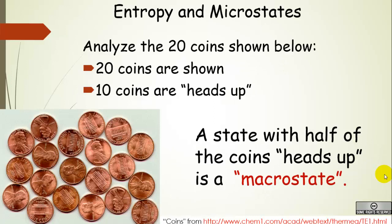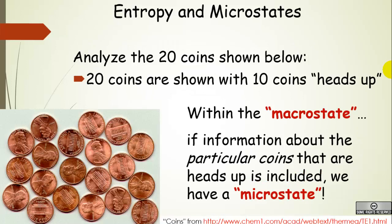Here's an example to get you thinking about microstates. In this picture, we have 20 coins. Some of them are heads-up and some are tails-up. Out of the 20 coins shown, 10 are heads-up and the other 10 are tails-up. A macrostate of the whole 20 coins with half of them heads-up is a certain macrostate. Within that macrostate, if we start caring about which specific coin is heads-up or tails-up, we can have different arrangements.